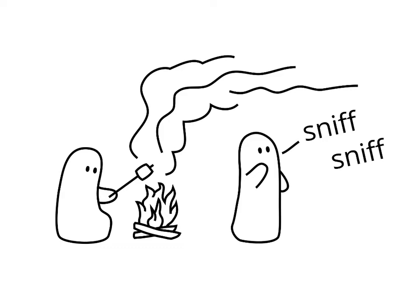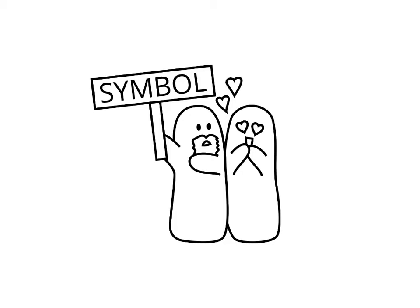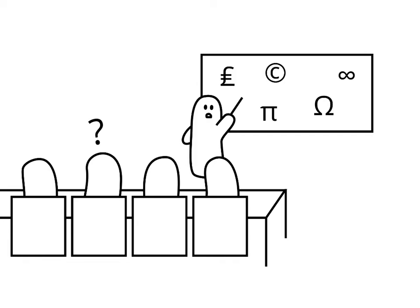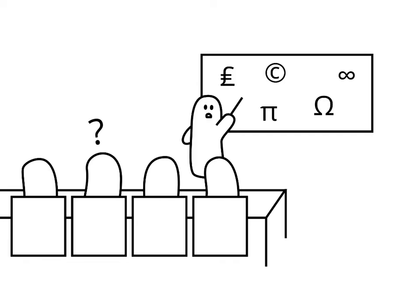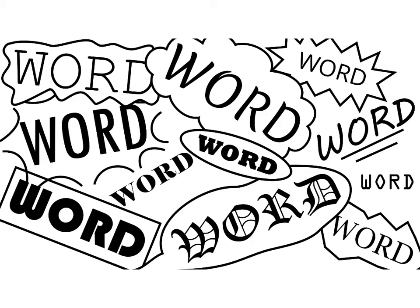A symbol is not inherently connected to the object. Instead, the connection is a matter of convention within a particular society. Because their meanings must be explicitly taught, symbols are easily misunderstood. Examples include the dotted lines on a road symbolizing that drivers may pass one another, and the Star of David symbolizing Judaism. Most words are also symbols, as they have no natural connection with the objects they represent.